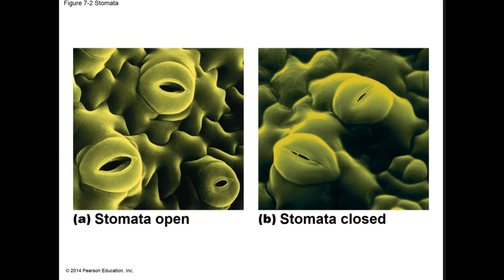This slide shows a close-up of the stomata. In figure A, it shows the stomata open, where gas exchange can occur. In B, it shows the stomata closed. Leaves obtain CO2 for photosynthesis from the air through pores in the epidermis called stomata.